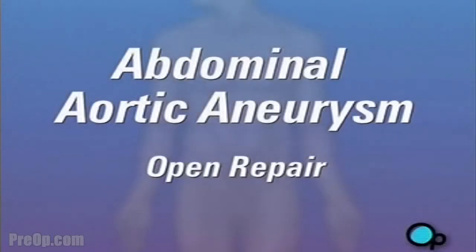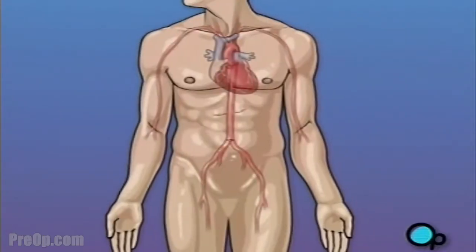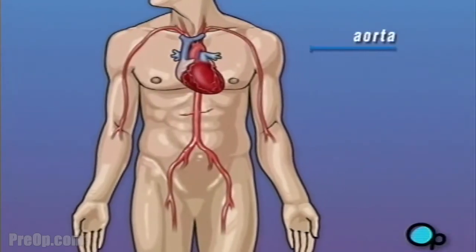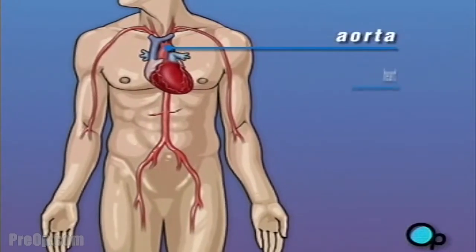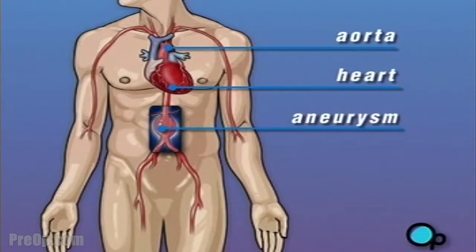Your doctor has recommended that you have surgery to treat an abdominal aortic aneurysm, but what does that actually mean? The aorta is the main blood vessel that carries oxygen-rich blood from your heart to the organs in your body. An aneurysm is a bulge or swelling in a blood vessel.